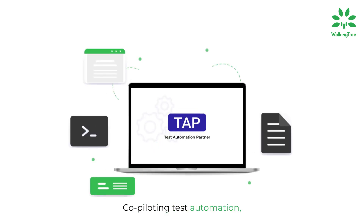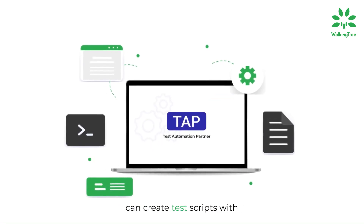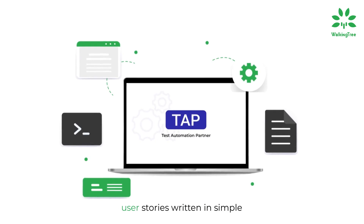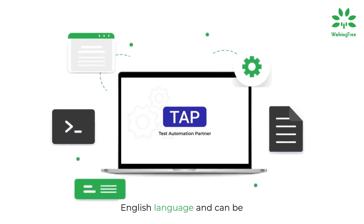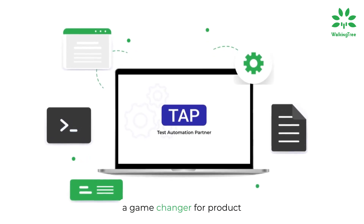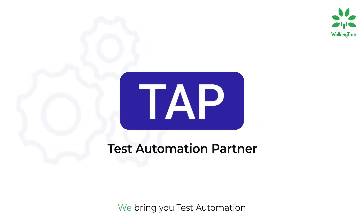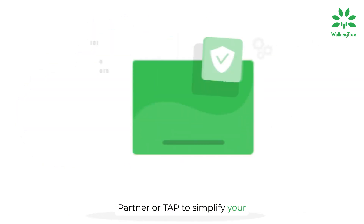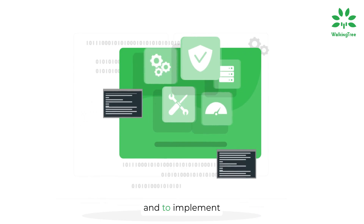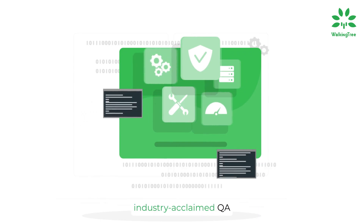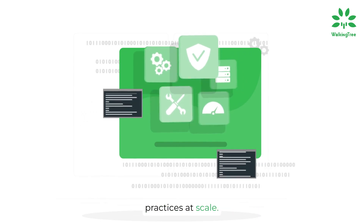Co-piloting test automation. TAP is an easy-to-use tool that can create test scripts with user stories written in simple English language, and can be a game-changer for product engineering teams. We bring you Test Automation Partner, or TAP, to simplify your automation testing experience and to implement industry-acclaimed QA practices at scale. Let's explore TAP.